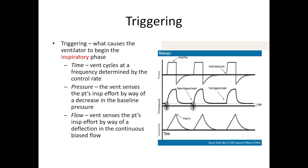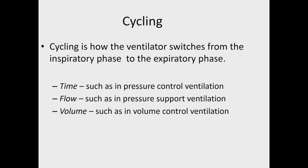The ventilator can also be triggered by pressure. If the patient initiates a breath and there's a negative pressure deflection, that can be sensed by the ventilator to trigger the beginning of inspiration. Similarly, it can be a flow trigger — if the patient begins to take a breath and the ventilator senses that inspiratory effort by way of a deflection in flow, then it will initiate the inspiratory phase.